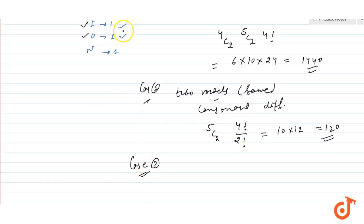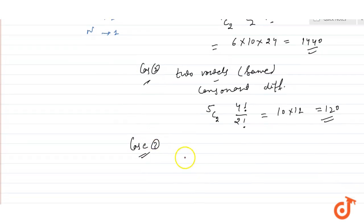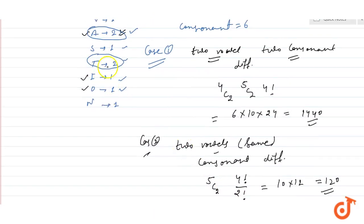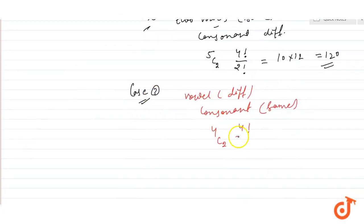Case 3: The vowels are different but we have two consonants that are same. So the vowels are different, 4C2. Same consonants are 2, so 4 factorial upon 2 factorial. This is 6 into 12, which is 72.